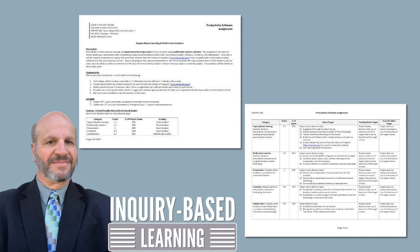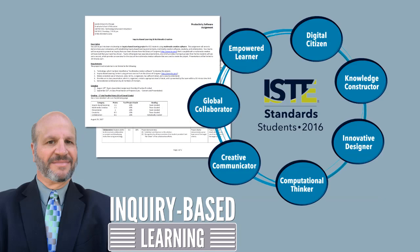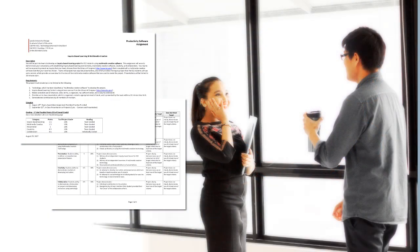Let's review the first assignment by going over the requirements and then working through an example. The focus for this assignment is to develop a project for K-12 learners, which introduces students to the process of inquiry-based learning using primary sources, while preparing students to be knowledge constructors and creative communicators, two of the seven ISTE standards for students. You will be organized in teams and asked to develop an inquiry-based learning project for K-12 students.